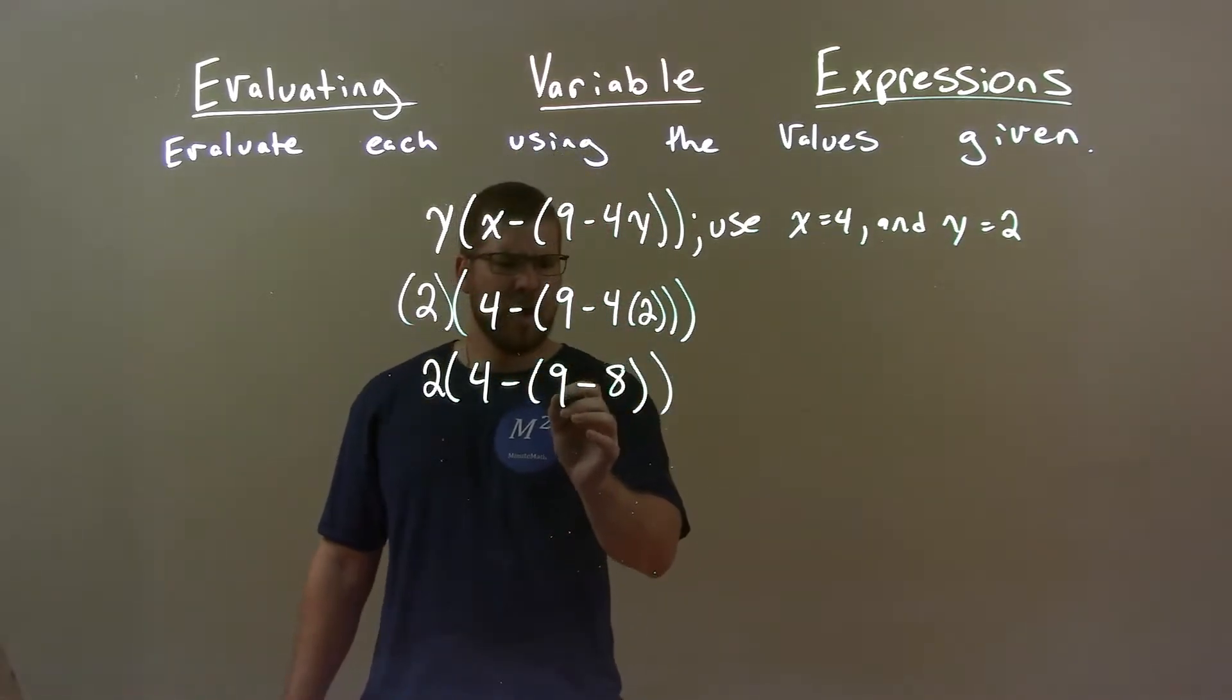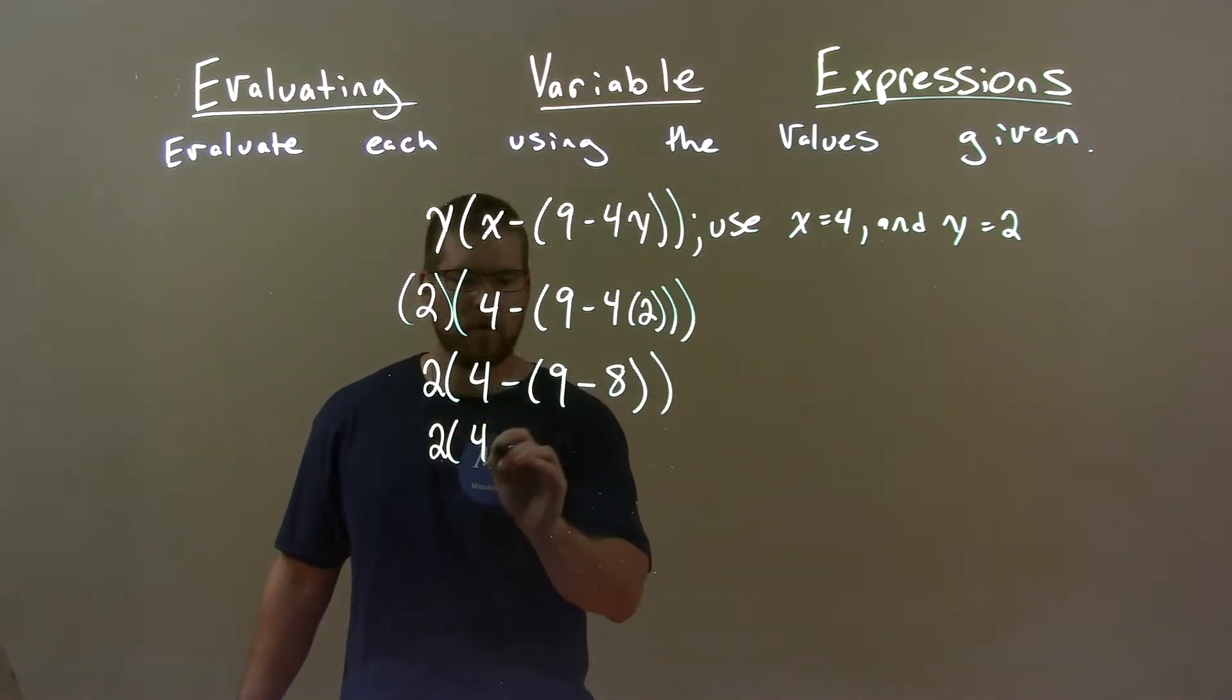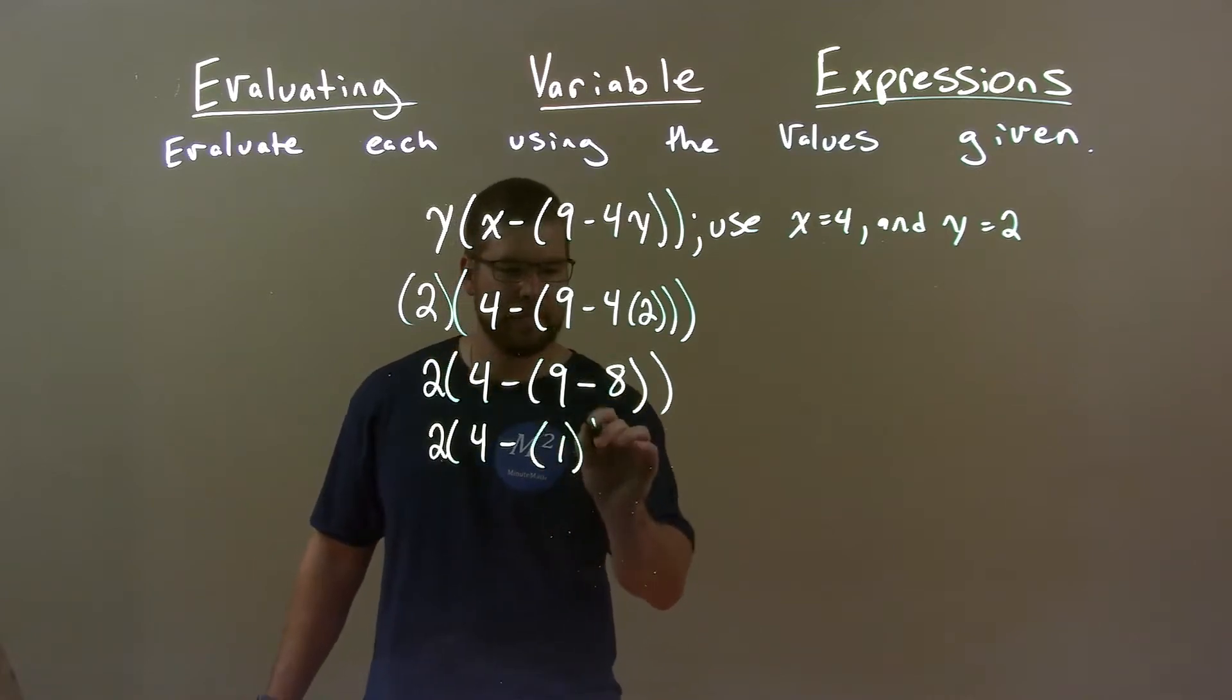Next step, 9 minus 8, most inside parentheses, is a 1. So we have 2 times 4 minus 1.